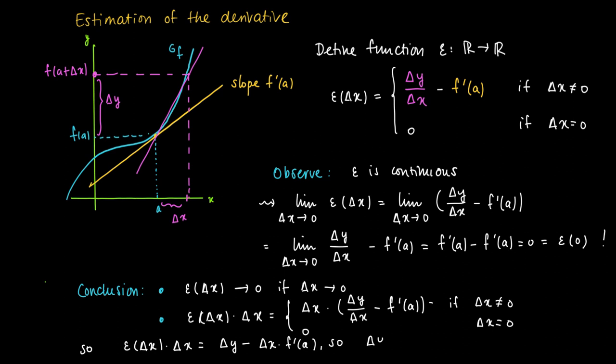So from this we learn that the actual change Δy equals the approximate change along the tangent line Δx times f'(a), plus a term which depends on the function ε. So ε(Δx) times Δx.